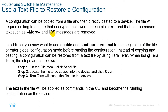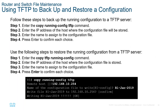To restore a configuration from a text file, open Notepad, copy the config, and paste it into the terminal — or in TeraTerm, go to the File menu, click 'Send File', locate the file, and click Open to paste it into the device. You can also use TFTP to back up the running configuration using 'copy running-config tftp', entering the TFTP server IP address.